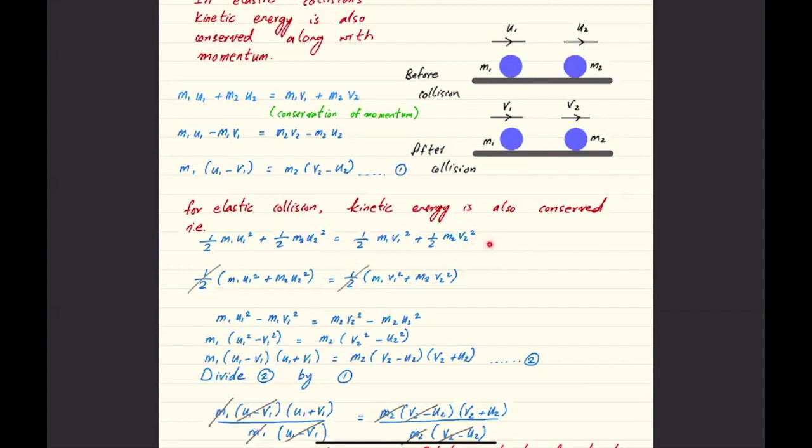So in that case this is going to be very close to being a valid assumption. So yeah, first thing first: what is elastic collision? An elastic collision is one in which kinetic energy before collision is equal to kinetic energy after collision.